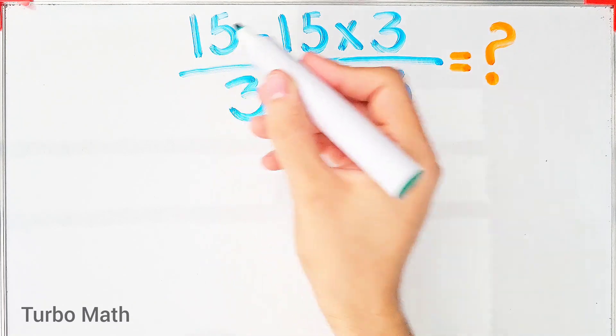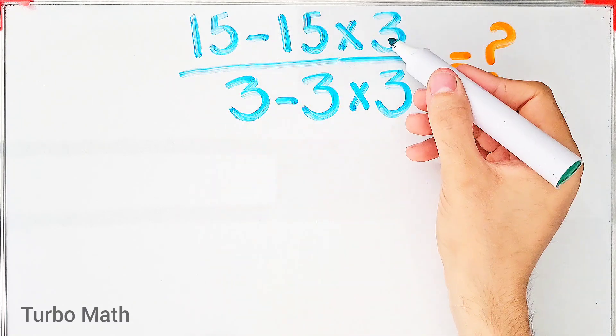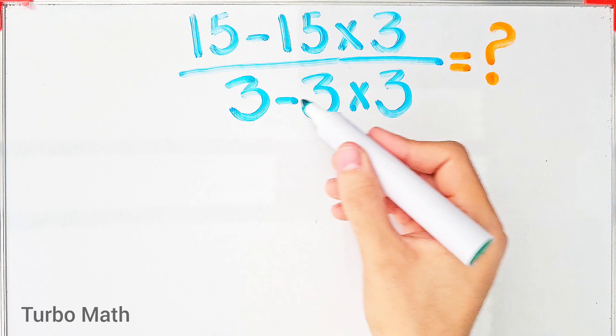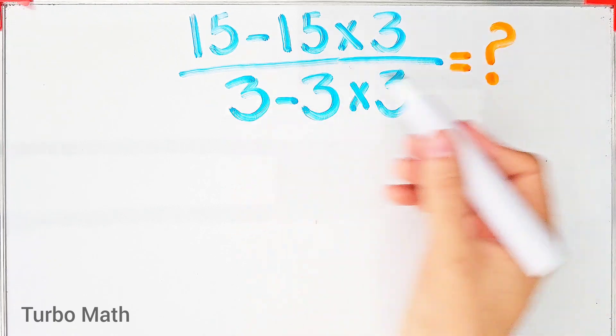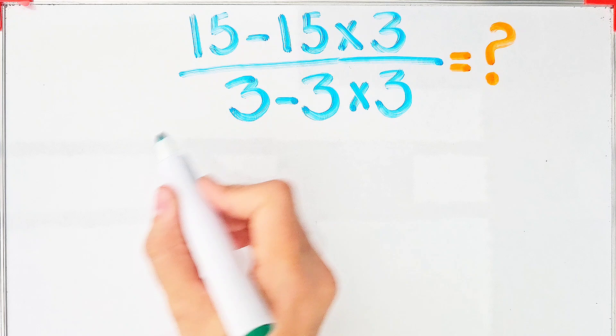15 minus 15 times 3 over 3 minus 3 times 3. What is the answer to this question? Can you solve it? First, we simplify the question.